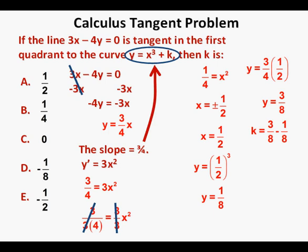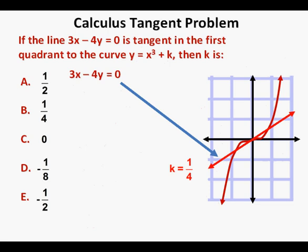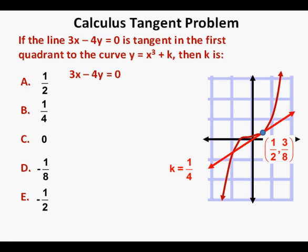So our answer for the value of k is k equals 2/8, or 1/4. Bringing back the graph of the curve, we draw in the line 3x minus 4y equals 0. Next, we raise the curve up about 1/4 of a unit and see that it fits the line where x equals 1/2. The graphs intersect at the point (1/2, 3/8), which is our point of tangency. So in our answer choices, k equals 1/4, and we circle B as our correct answer.